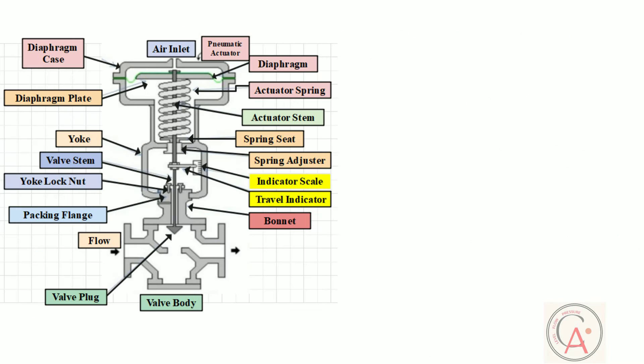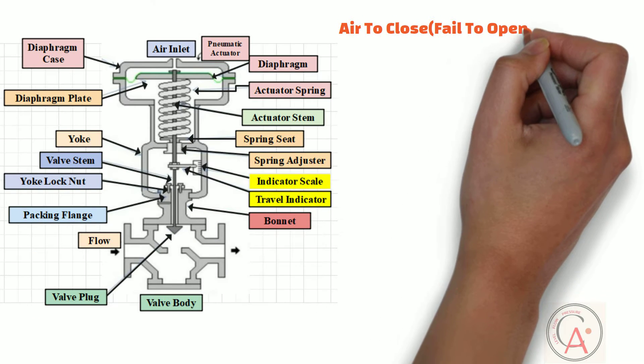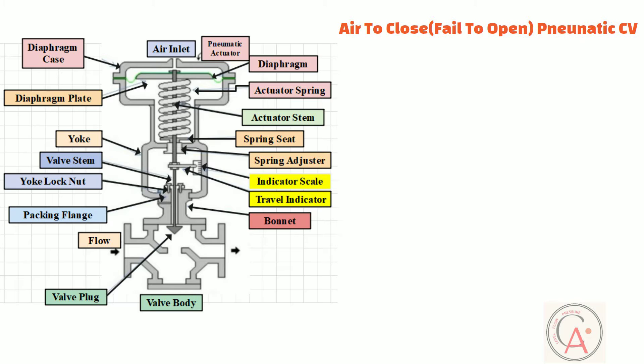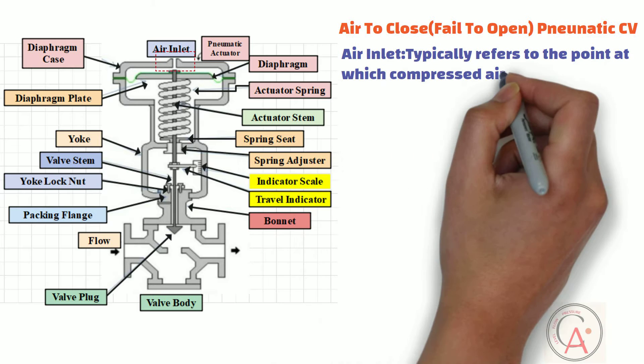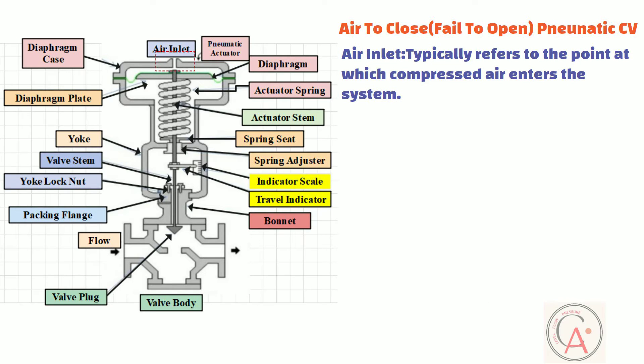As you can see, it is air to close or fail to open the pneumatic control valve. And this is the air inlet port of the pneumatic control valve. The air inlet port is the point at which compressed air enters the system. This is a crucial part of pneumatic control systems as it provides the energy required to actuate pneumatic components such as valves, cylinders, and actuators.